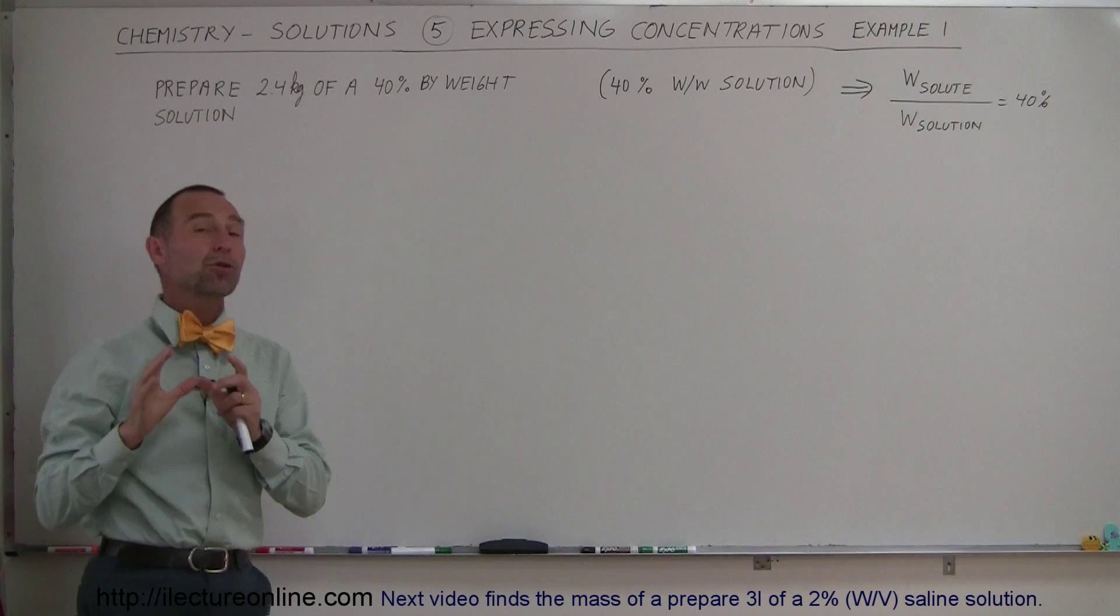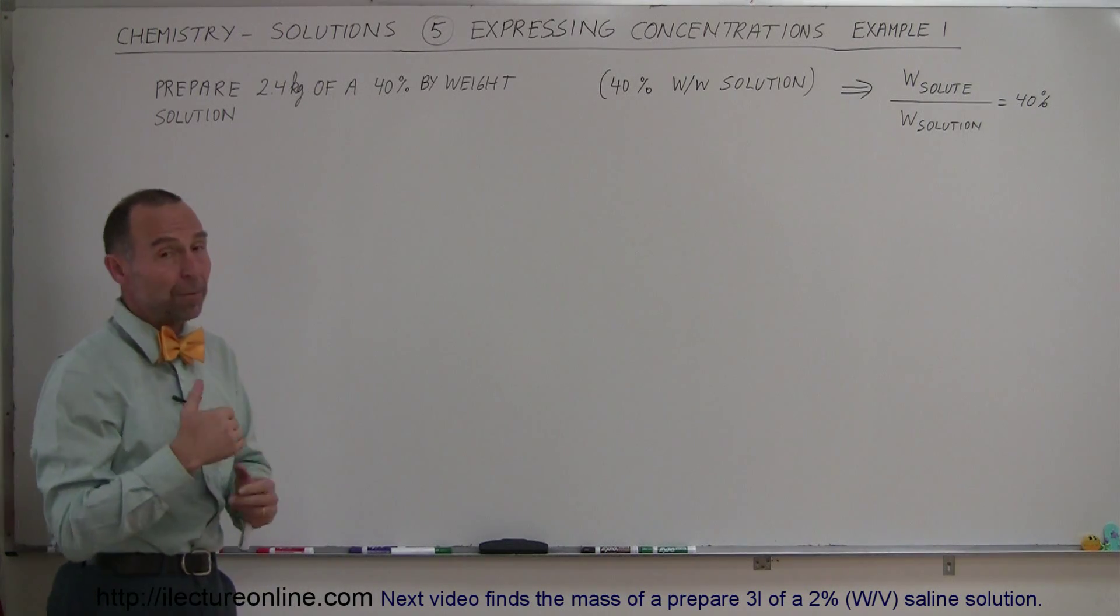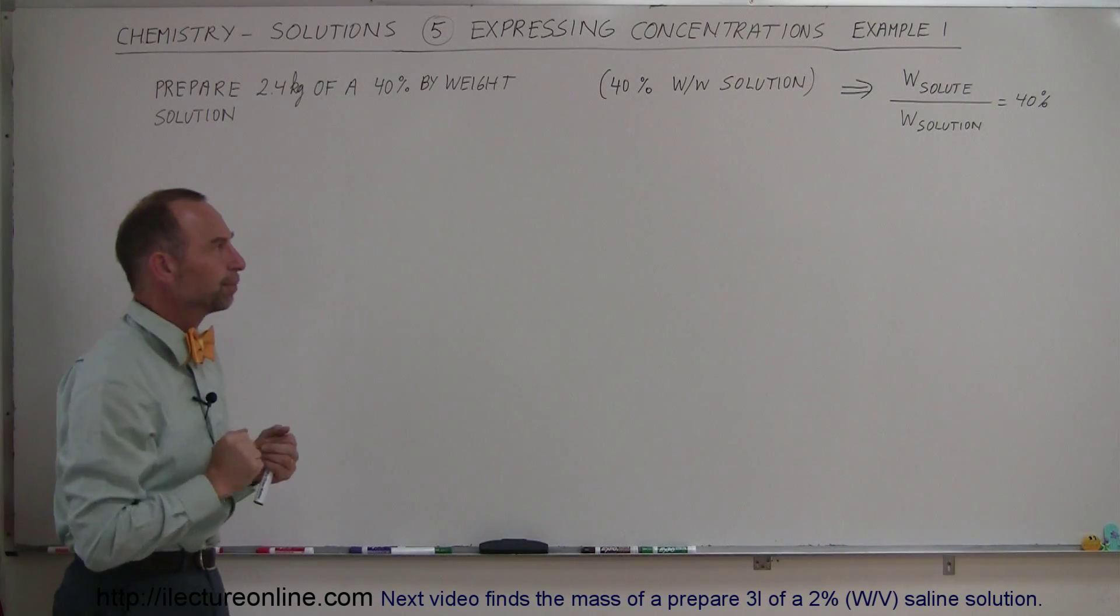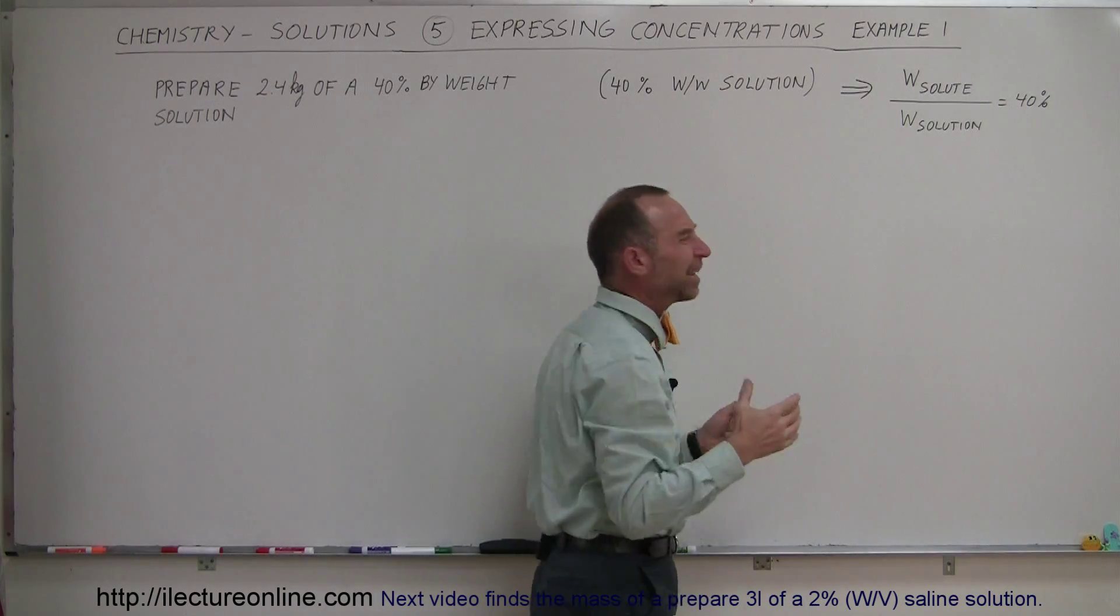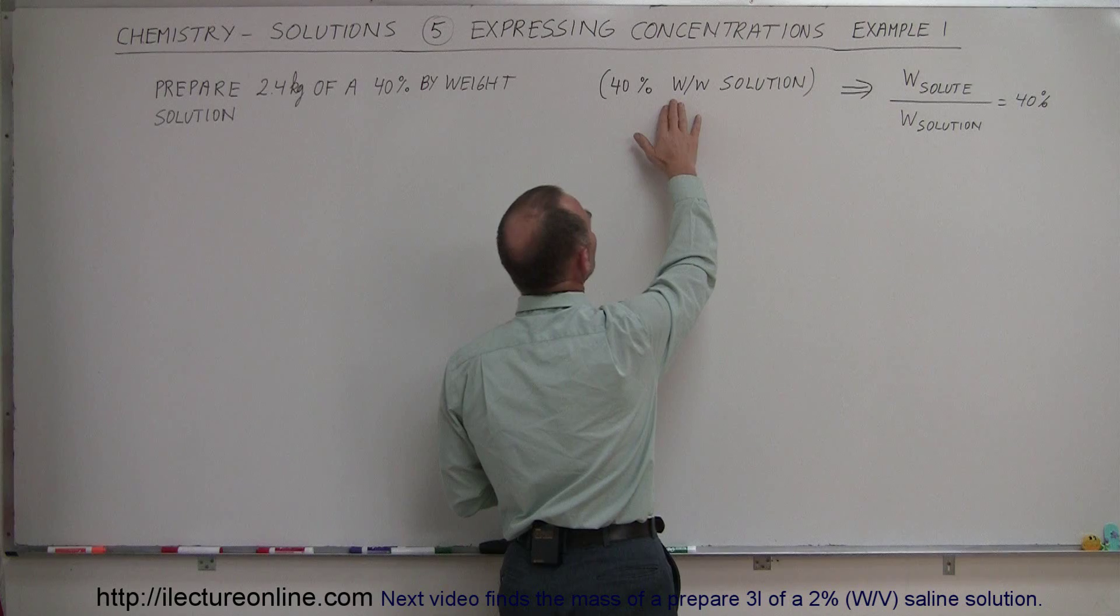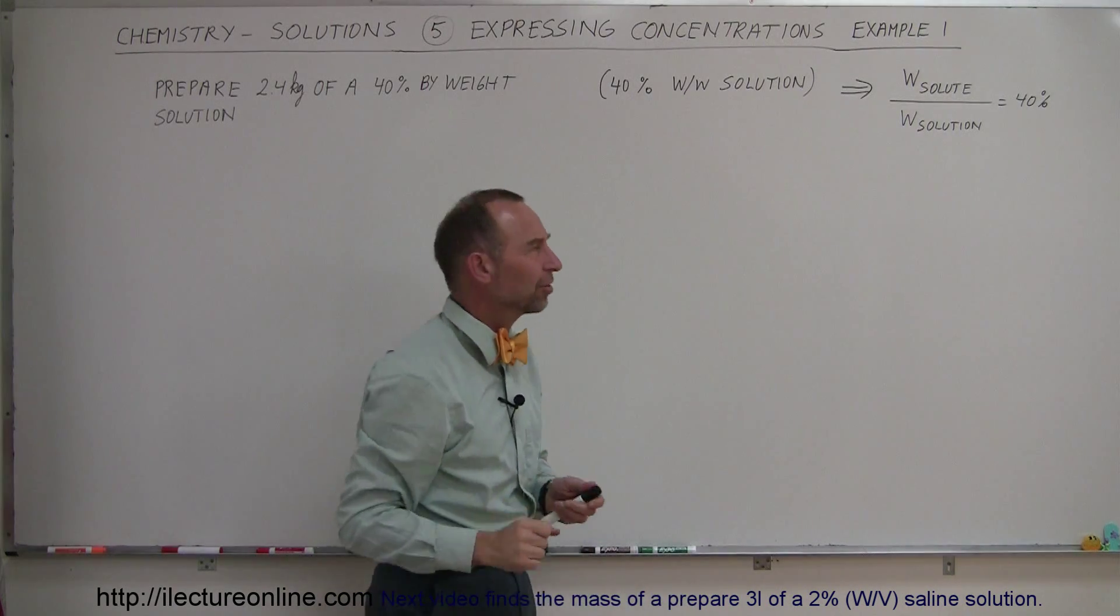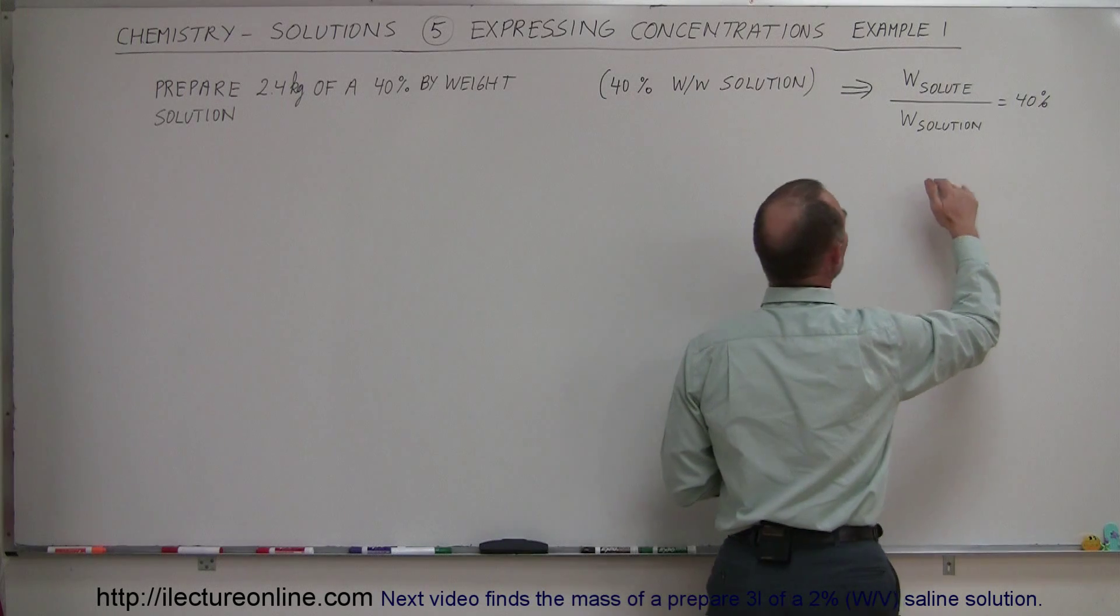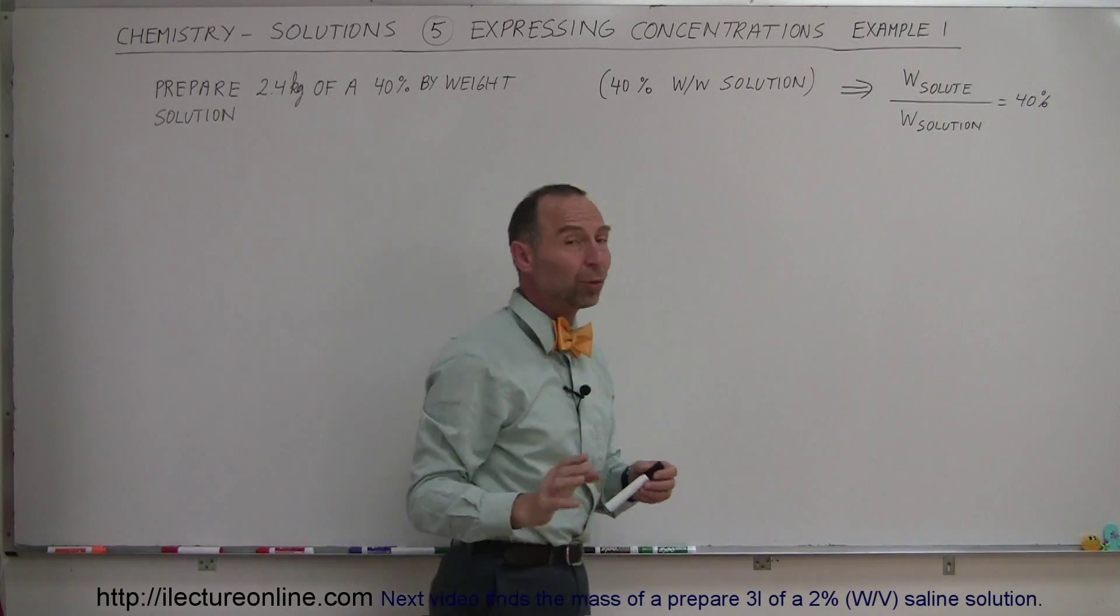In other words, 40% of the total weight should be solute out of 100% of the total solution. Remember, it's always in reference to the solution. If we have 40% weight in weight, that means 40% weight of the solute in 100% weight of the solution. The ratio of the weight of the solute divided by the weight of the solution is 40%.